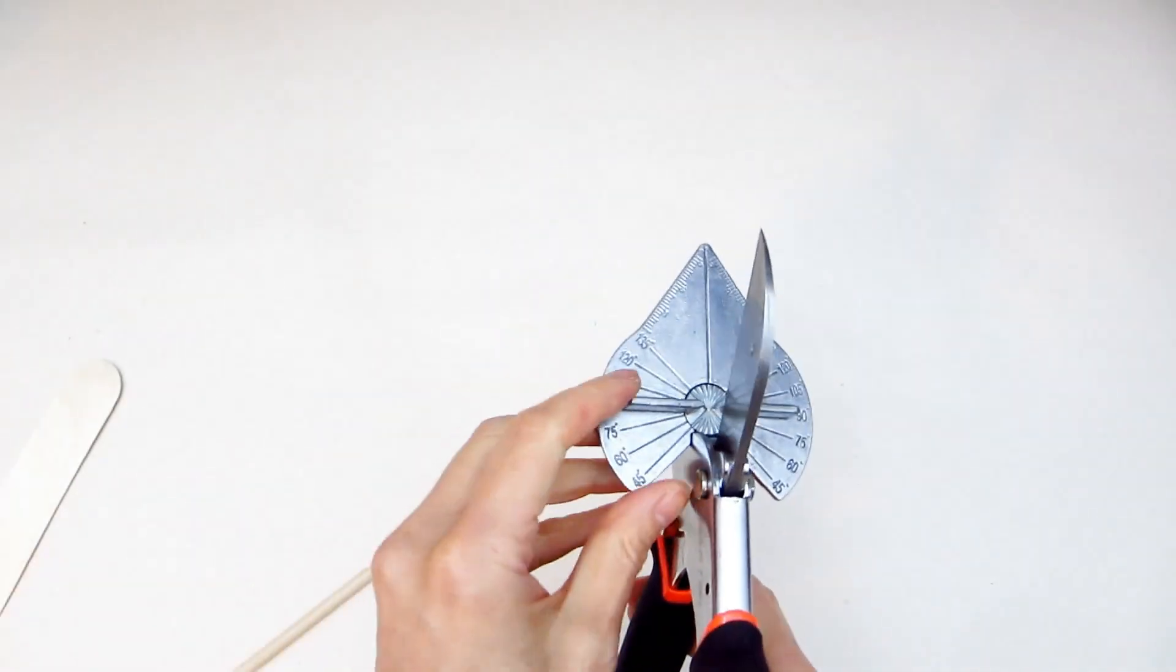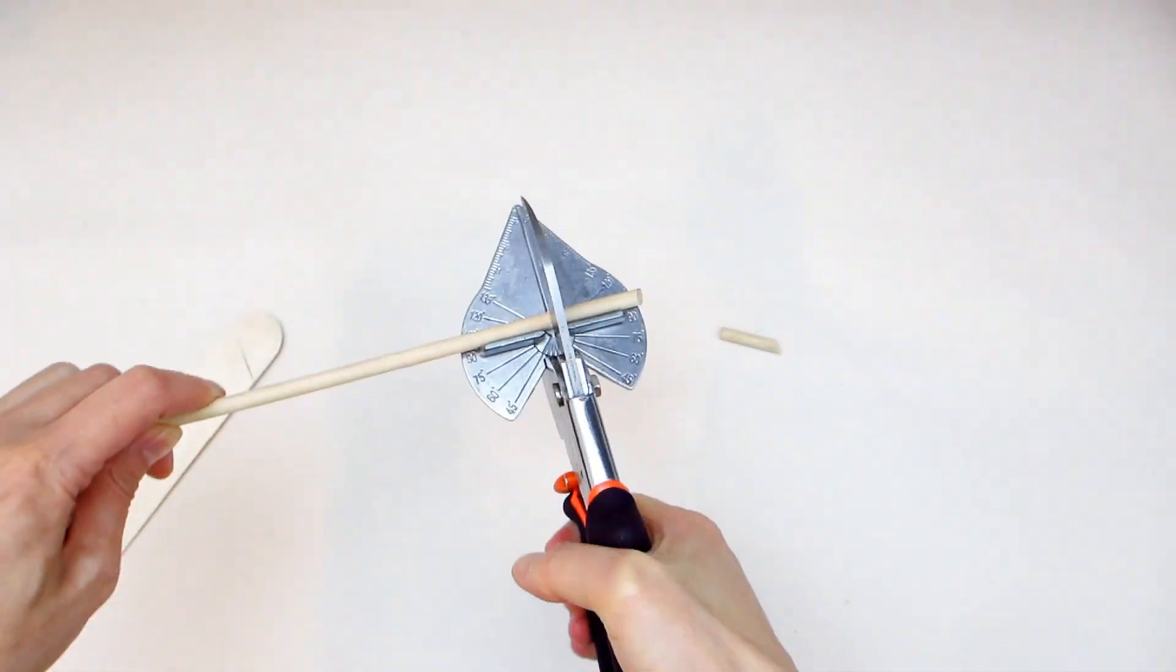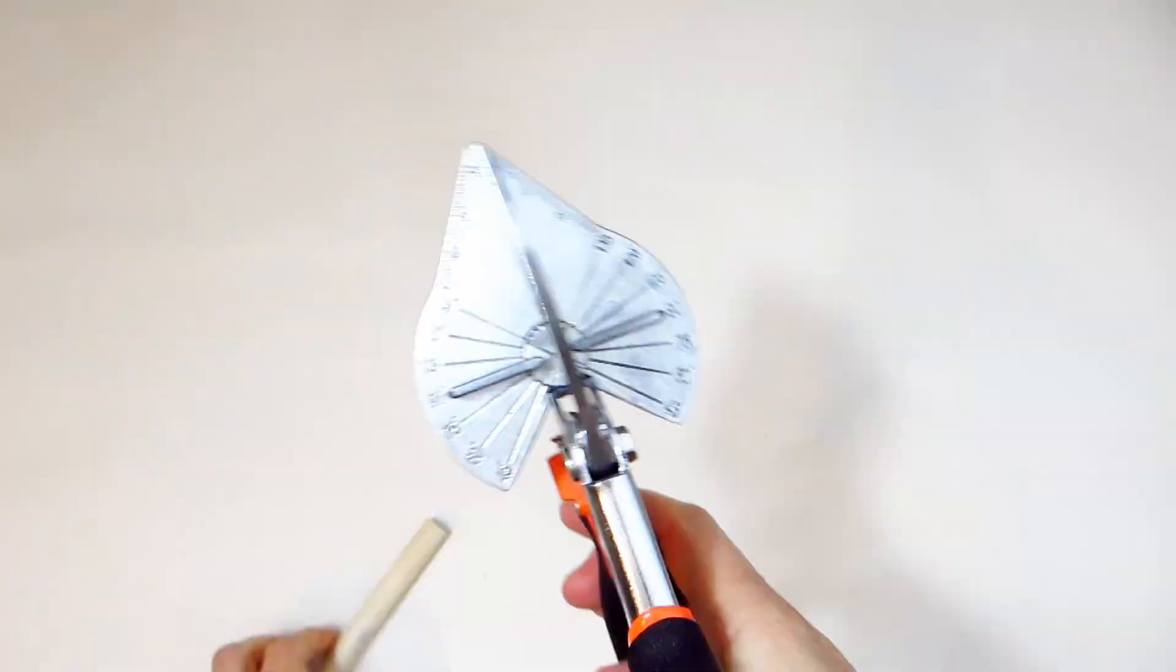The shears can be used to cut wood. Here I'm setting the angle using the adjustable slider. Then I'm placing a wooden dowel onto the scale surface so that the wooden dowel sits right up against the slider.